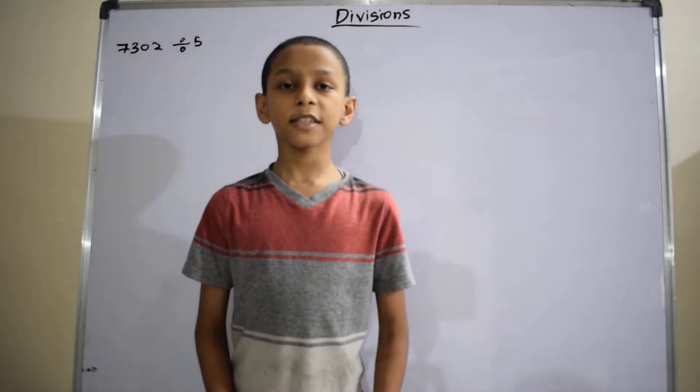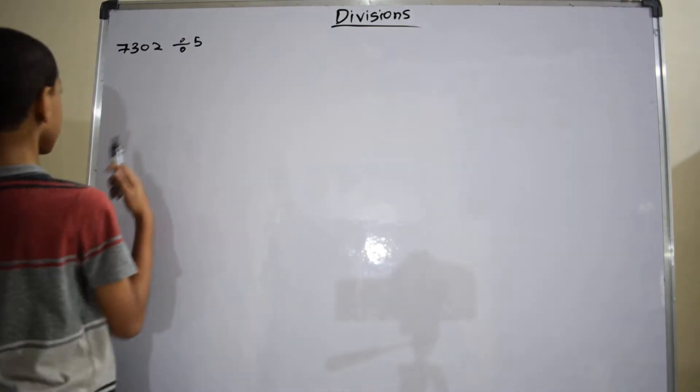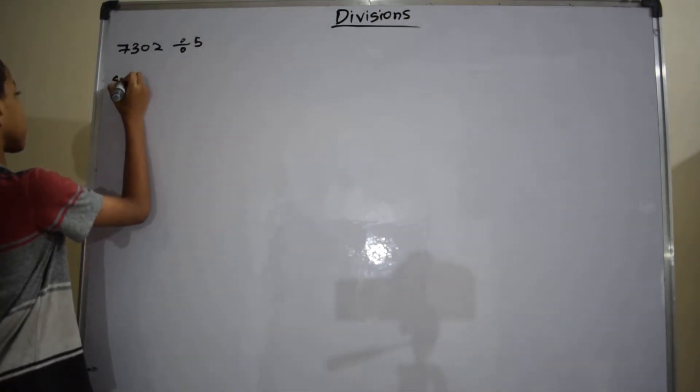Hi, I am Sai Prabhakar. Let's discuss the solution of this problem. The problem is 7032 divided by 5. Let's start the solution.